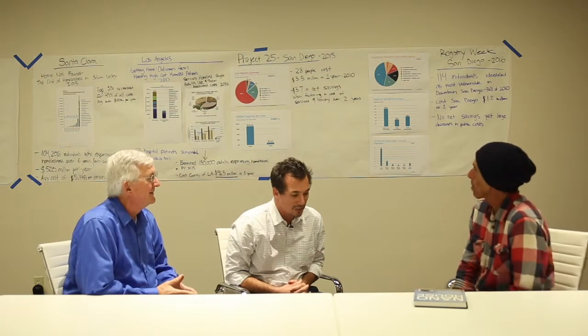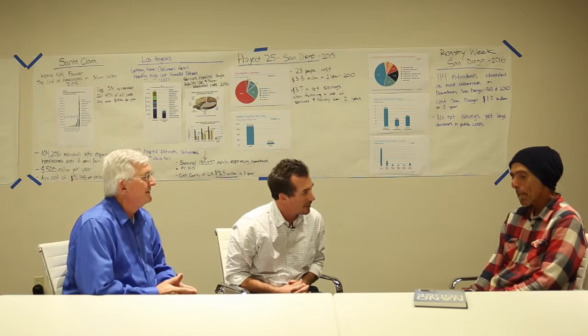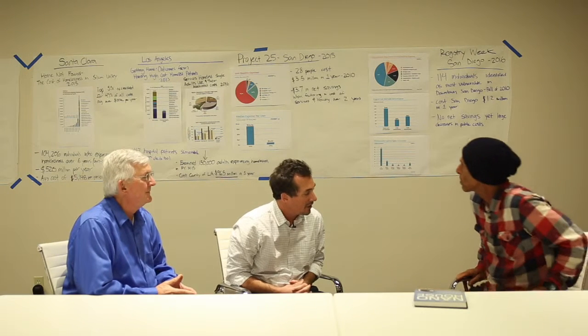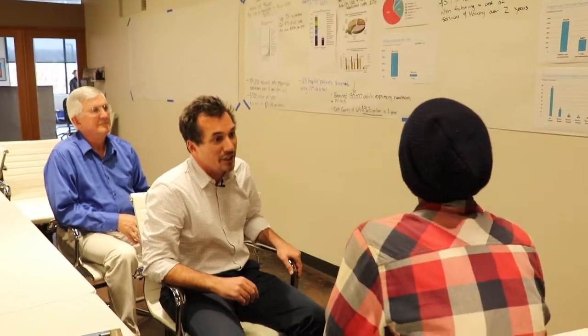Yeah, sure. So Project 25 was a pilot project put together by the United Way to look at San Diego's most expensive people who are experiencing homelessness and to, using a housing-first approach, find those folks, put them into supportive housing, and then track their use of public services over time. So it was a partnership with the United Way, the city, the San Diego Housing Commission, and the County of San Diego to really demonstrate locally here that it does essentially cost more to do nothing as far as homelessness goes. The results of Project 25 are pretty incredible.